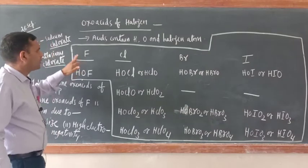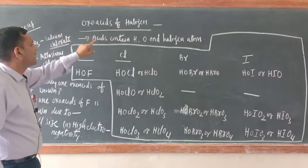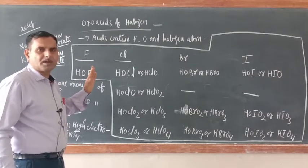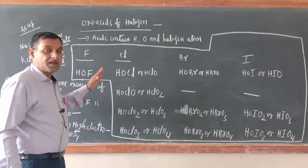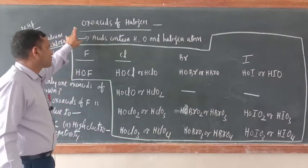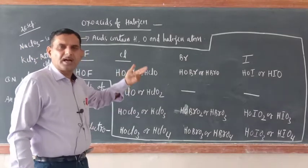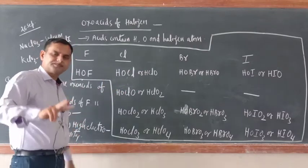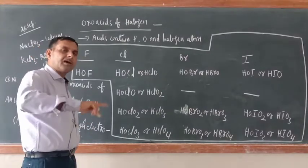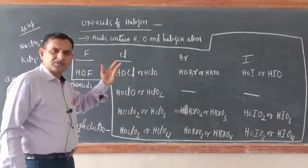Now coming back to today's topic. The topic is oxo acids of halogens. We have already studied the oxo acids of phosphorus, sulfur, and nitrogen. Now, oxo acids of halogens — halogen means fluorine, chlorine, bromine, and iodine. The meaning of oxo acids: there are two types of acids — hydra acids and oxo acids. Hydra acids contain hydrogen along with one more atom. Oxo acids contain hydrogen and oxygen along with the concerned atom, like H2SO4 (oxo acid of sulfur) or HNO3 (oxo acid of nitrogen).